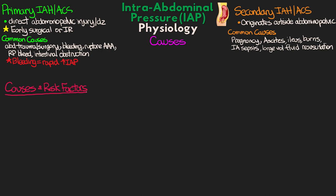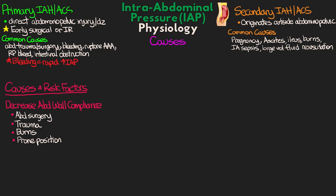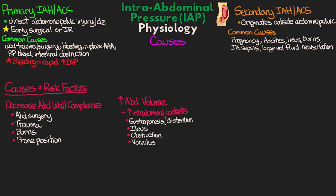For the various causes and risk factors, it helps to think of them in terms of how they contribute to elevation in intra-abdominal pressure. First, we have things that decrease abdominal wall compliance, such as abdominal surgery, trauma, burns that restrict abdominal movement, and prone positioning — all of which prevent compensation for rising pressure. Next, things that increase abdominal volume include increased intraluminal contents: gastroparesis, gastric distension, ileus, obstruction, and volvulus. These lead to increases in intra-abdominal volume, which in a closed compartment with poor wall compliance will raise pressure.